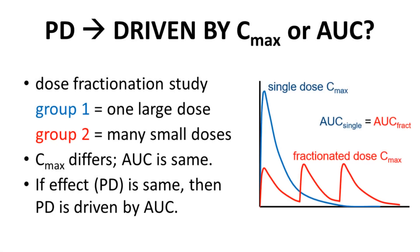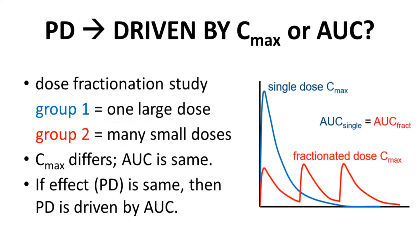Another PKPD-related question is whether the effect of the drug is mostly determined by CMAX or area under the curve. Both CMAX and AUC are methods of measuring drug exposure. This question can often be answered through a dose fractionation study, in which one group is given a single large dose and another group is given multiple smaller doses. The total mass of the doses is identical, so AUC values will be the same, but CMAX will be much lower for the second group.